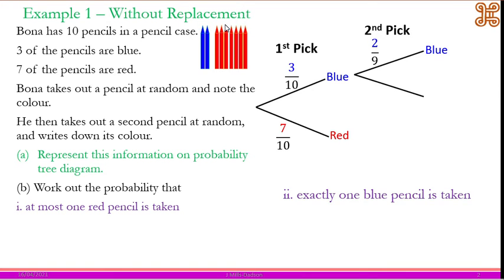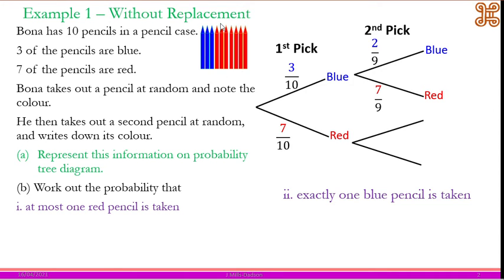The red will still be the same number but the total will be out of nine, so getting a red will be seven out of nine. Once you finish one side you need to revert to the original position. On the red branch, we pick a red so we take one of the reds off — therefore we have six reds. So getting a red will be six out of nine, and blue will be three out of nine. This is the key difference between a probability tree diagram with replacement and without replacement.